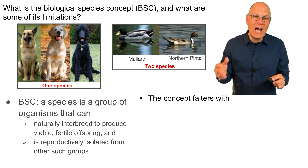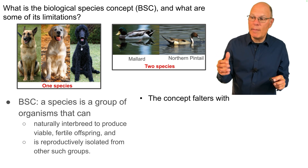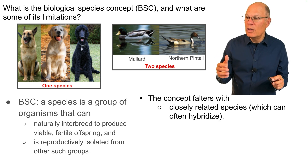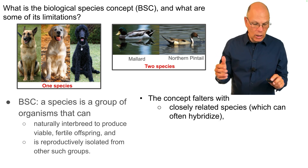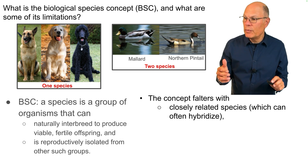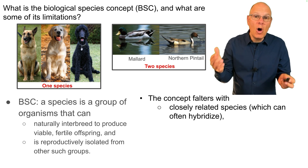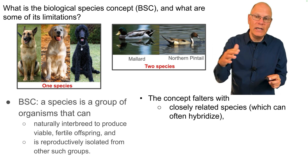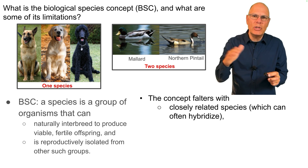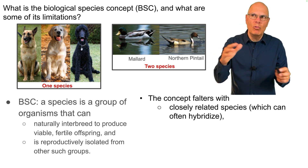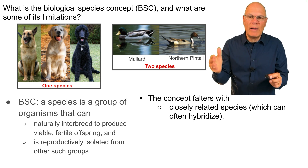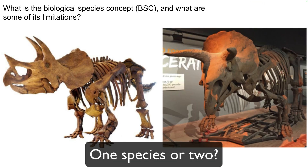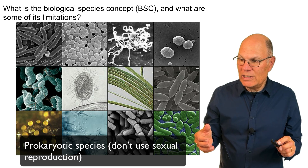The concept is not perfect, and it falters in a couple of cases. The first is closely related species, which can often hybridize — they can often interbreed, but not so much, so the gene pools maintain relative separateness. Extinct or asexual species present another problem: how could you tell if they could produce fertile or viable offspring? And the same issue applies to prokaryotic species.